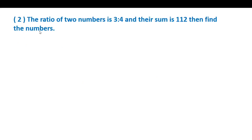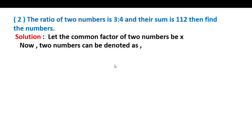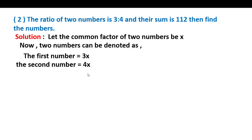Second question: The ratio of two numbers is 3 is to 4 and their sum is 112, then find the numbers. We have given the ratio of two numbers 3 is to 4. Let the common factor of two numbers be x. The first number is 3x and the second number is 4x. The sum of two numbers is 112, so 3x plus 4x is equal to 112.